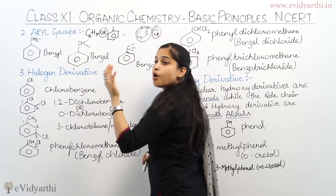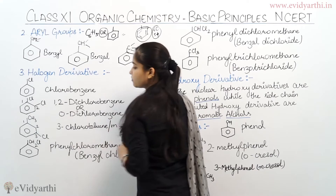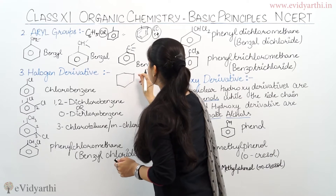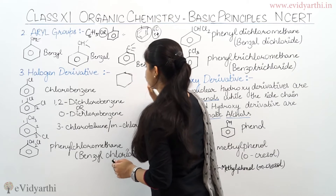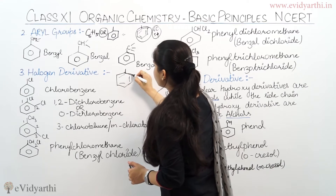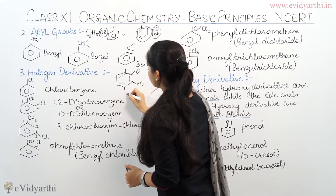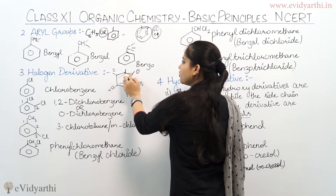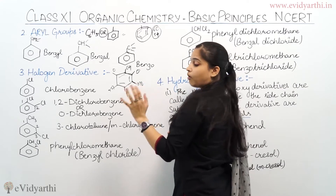Why ortho-dichlorobenzene? Because chlorine is in the ortho position. You know that in a benzene ring, positions are called ortho, meta, and para. Suppose I have a benzene ring with a functional group attached — the adjacent positions are called ortho, the positions one carbon further are called meta, and the position directly opposite is called para.